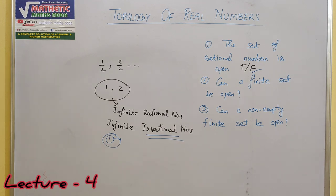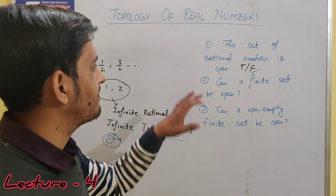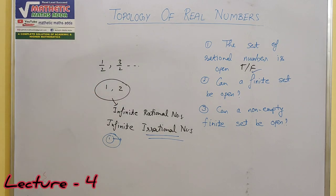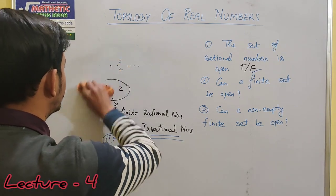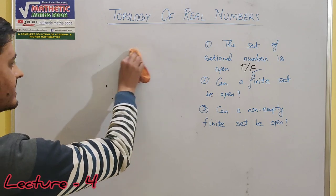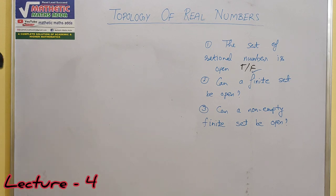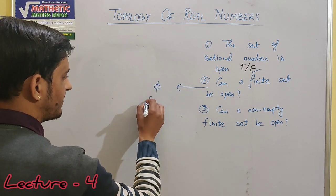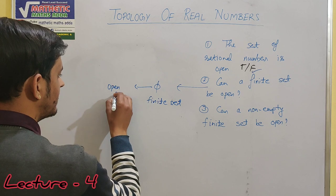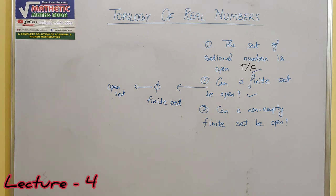तो यह पहले question का solution हो गया। Systematic solution आप इसका लिख सकते हैं — बहुत important question है और यह बहुत important property भी है जो आपको exams के लिए याद रखनी है। दूसरा question: can a finite set be open? इसका सबसे easy example है empty set — क्योंकि empty set एक finite set है, और यह open भी होता है। तो a finite set can be open।